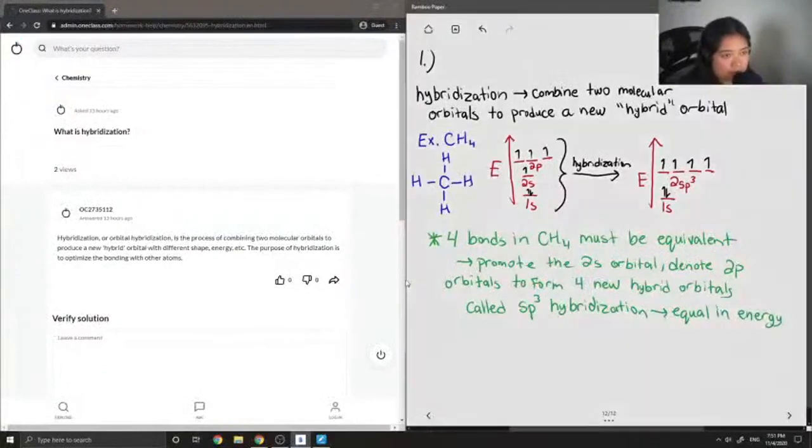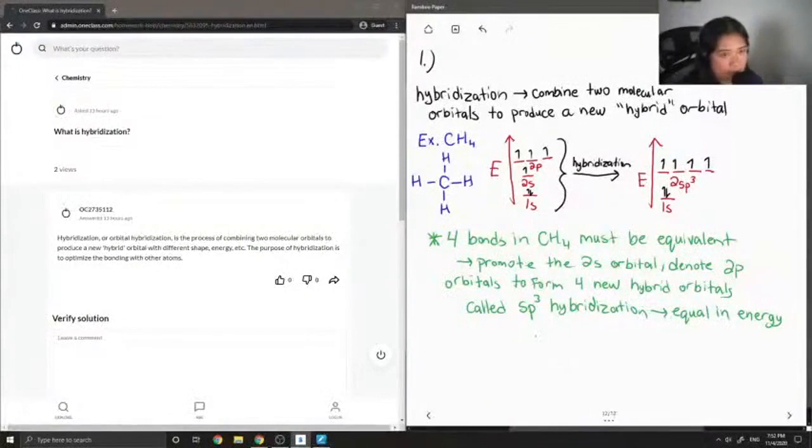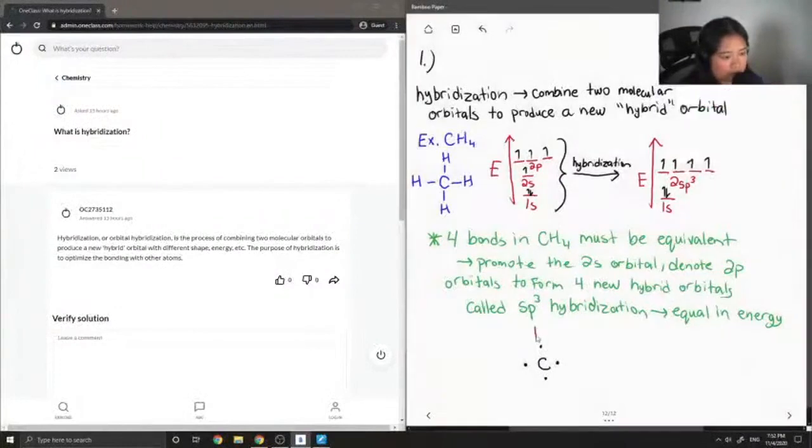So if we were to write out that same CH4 molecule, you'd have the carbon in the middle. Let me write it smaller. So you have the carbon in the middle with its four electrons, these are its four valence electrons, and then around it are all of the hydrogens each with their valence electrons as well.